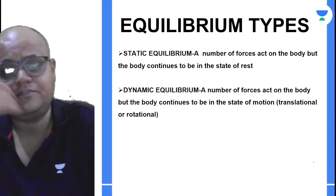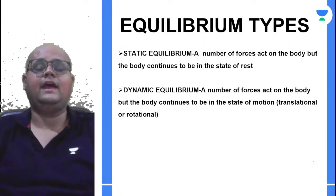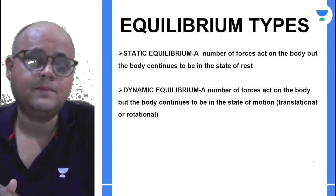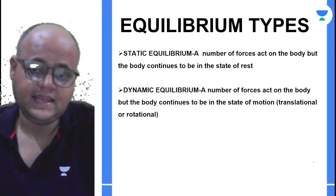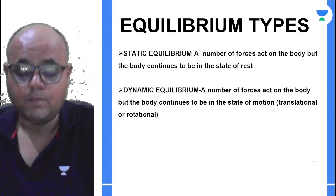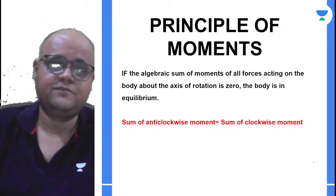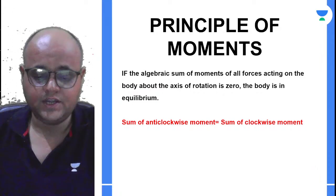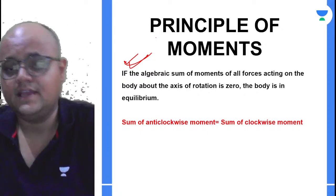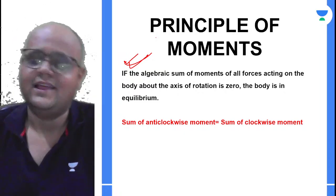If a body was moving and a number of forces started acting on it but the net force was zero, then we can say the body is in equilibrium. So it is not necessary that a body must be stationary for equilibrium — even a moving body can be in equilibrium. The principle of moments states: the algebraic sum of the moments of all the forces about the axis of rotation is zero, meaning the anticlockwise moment equals the clockwise moment.